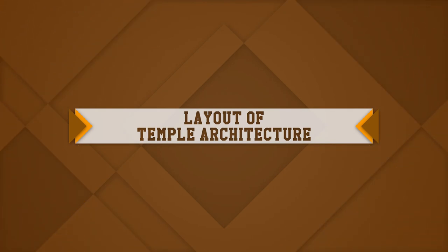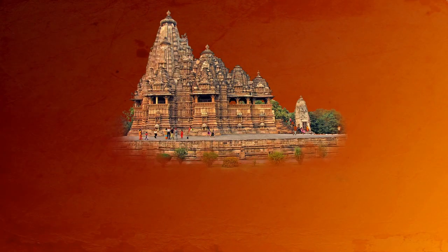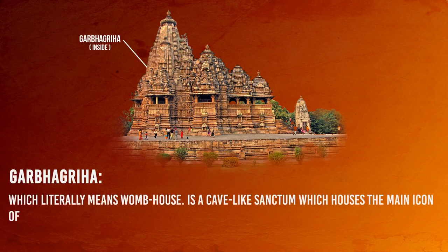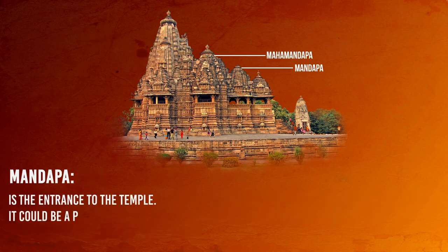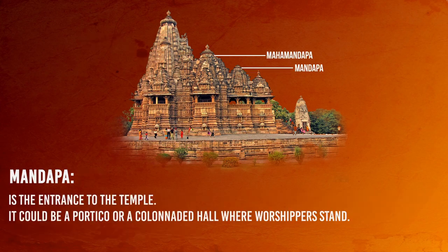The basic elements that comprise a Hindu temple are as follows. Garbhagriha, which literally means the womb house, is a cave-like sanctum which houses the main icon of the temple. In earlier times it was a small cubicle with one entrance; in later periods it grew into a larger chamber. Mandapa is the entrance to the temple — it could be a portico or a pillared hall where worshippers stand.